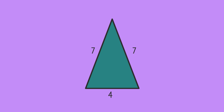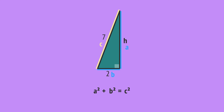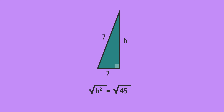We can also use Pythagoras to calculate the height of an isosceles triangle. This height intersects the base at 90 degrees, splitting the isosceles triangle into two right-angled triangles with the base split in half. Focusing on one of these right-angled triangles, we know the longest side, which we label c, and label the other sides a and b. Since the sides are related by Pythagoras, we substitute into the formula, giving h squared plus 2 squared equals 7 squared. Calculating the squares gives h squared plus 4 equals 49. Subtracting 4 gives h squared equals 45, and taking the square root on a calculator gives the height as 6.7 when rounded to one decimal place.